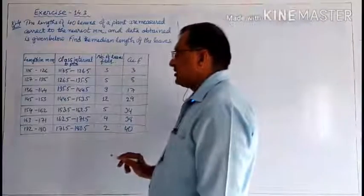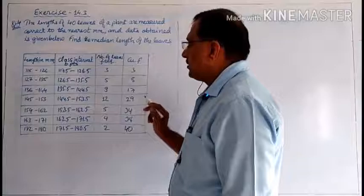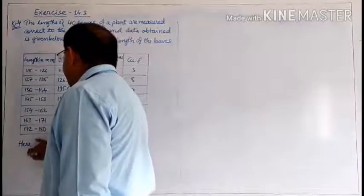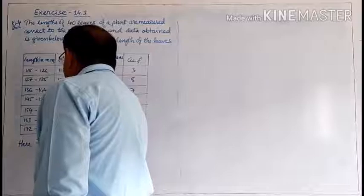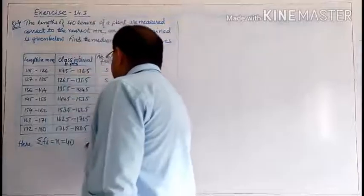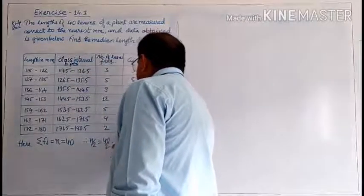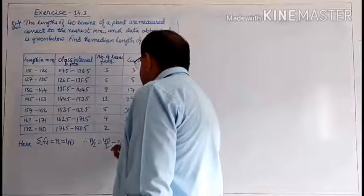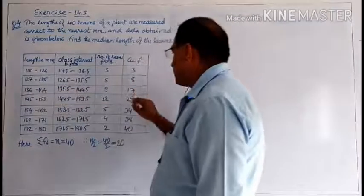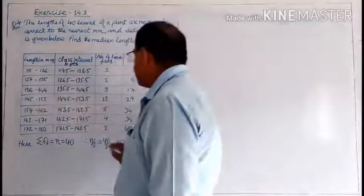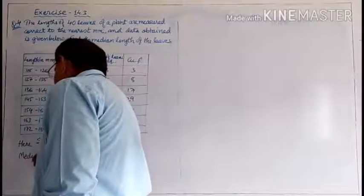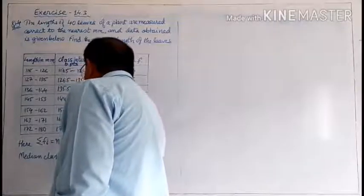So the cumulative frequency table is complete. For the median, n = 40, so n by 2 = 20. We need to find where the 20th observation lies. Up to the 17th observation lies in the 135.5–144.5 class. From the 18th up to the 29th lies in 144.5–153.5. So the 20th observation lies in the 144.5–153.5 class, which is the median class.